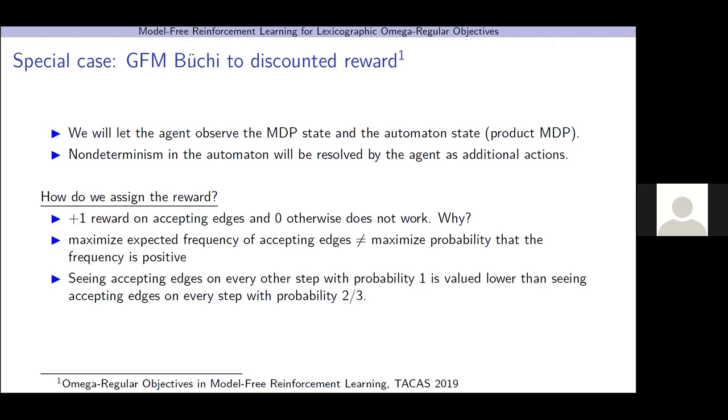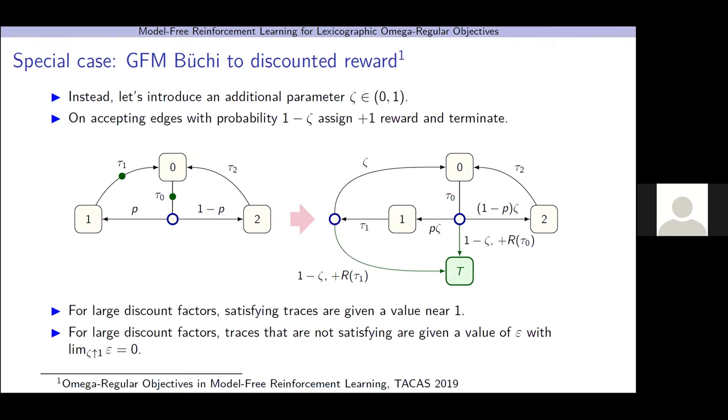Instead, we've introduced an additional parameter, zeta. On accepting edges, with probability 1 minus zeta, we'll assign plus 1 reward and terminate. So, let's see what this accomplishes. For large discount factors, satisfying traces are given a value near 1. Satisfying traces will see accepting edges infinitely often, and with probability 1, we'll trigger this transition and receive plus 1 reward. And because we're discounting, we get a value slightly less than 1.